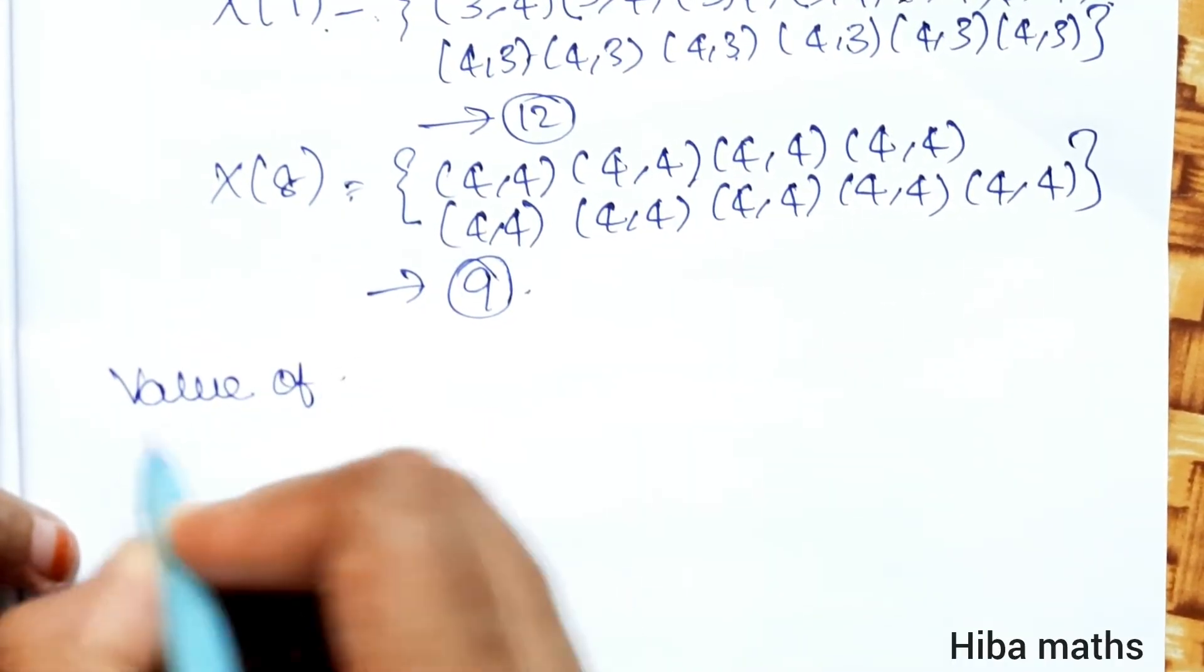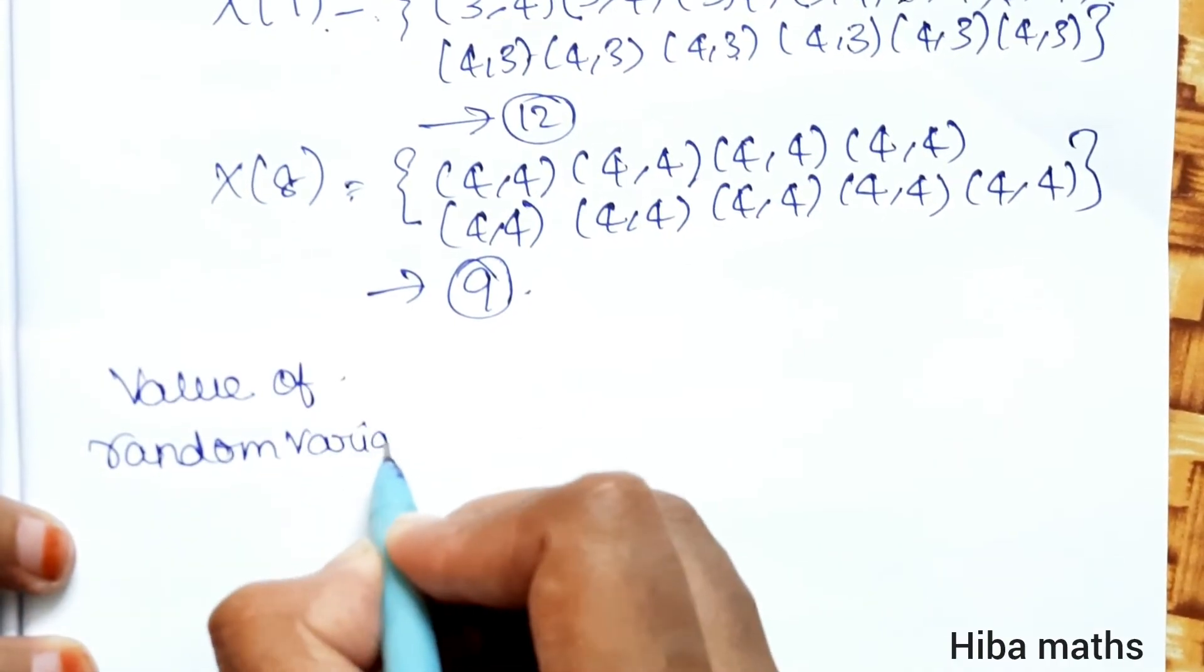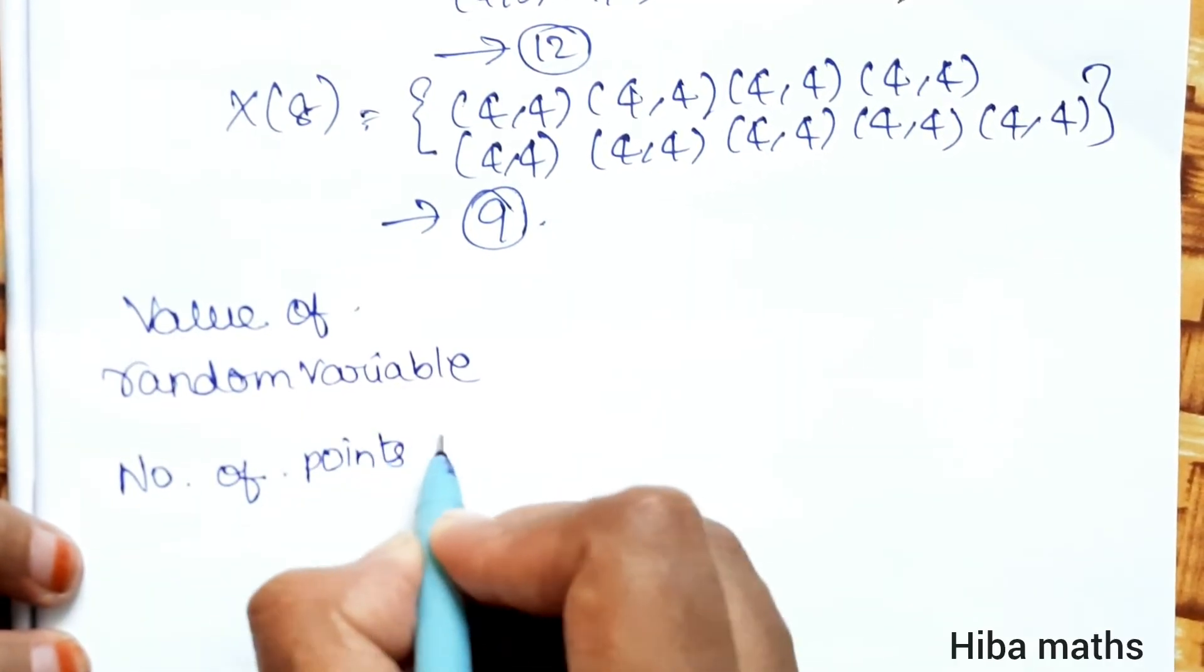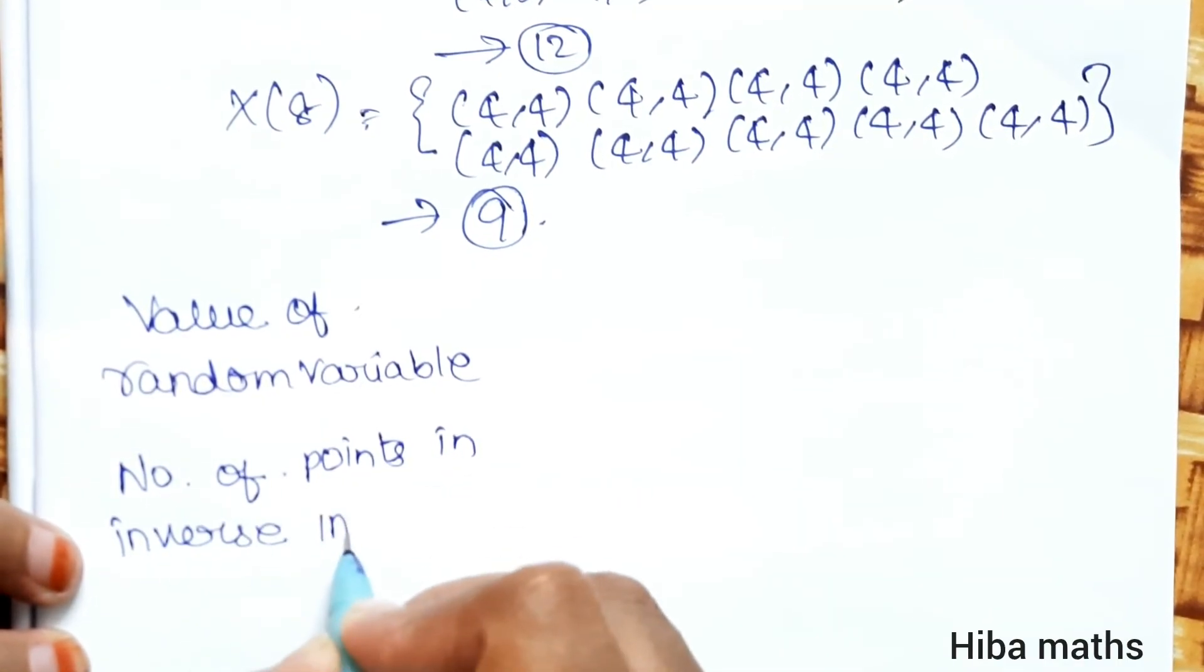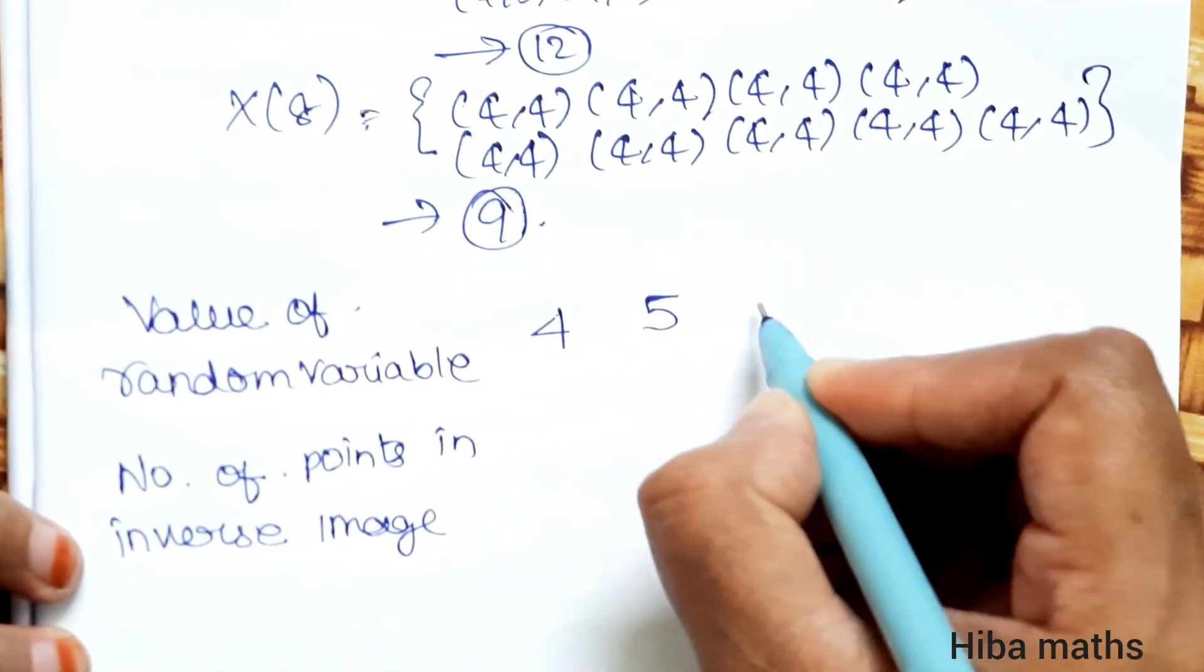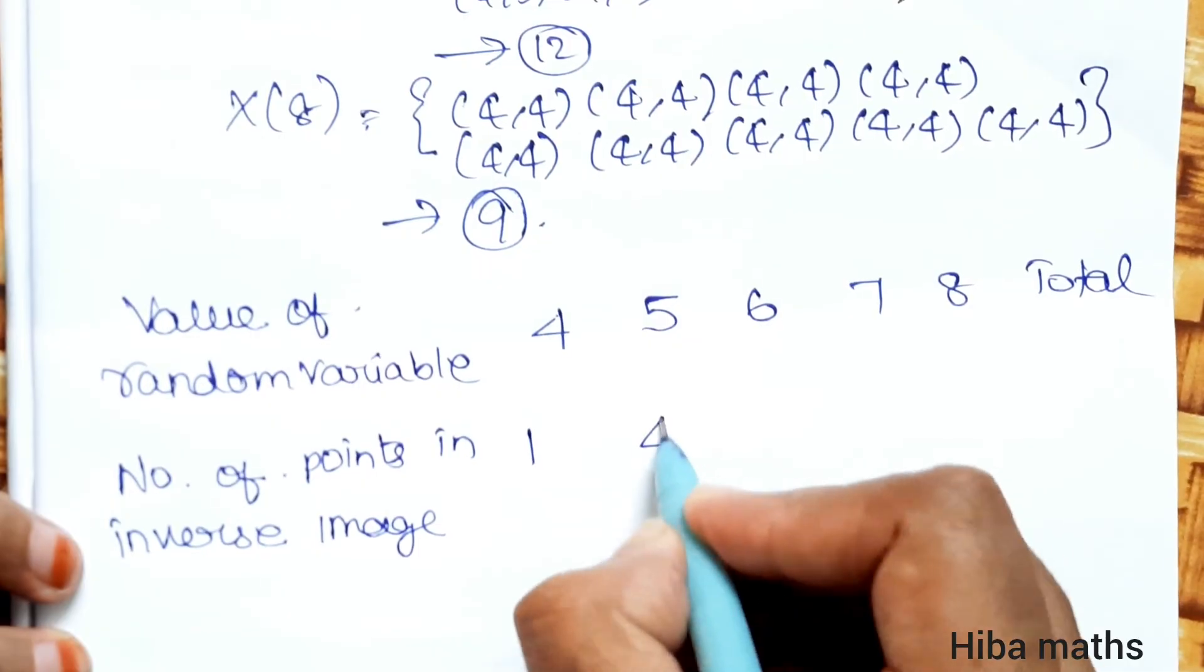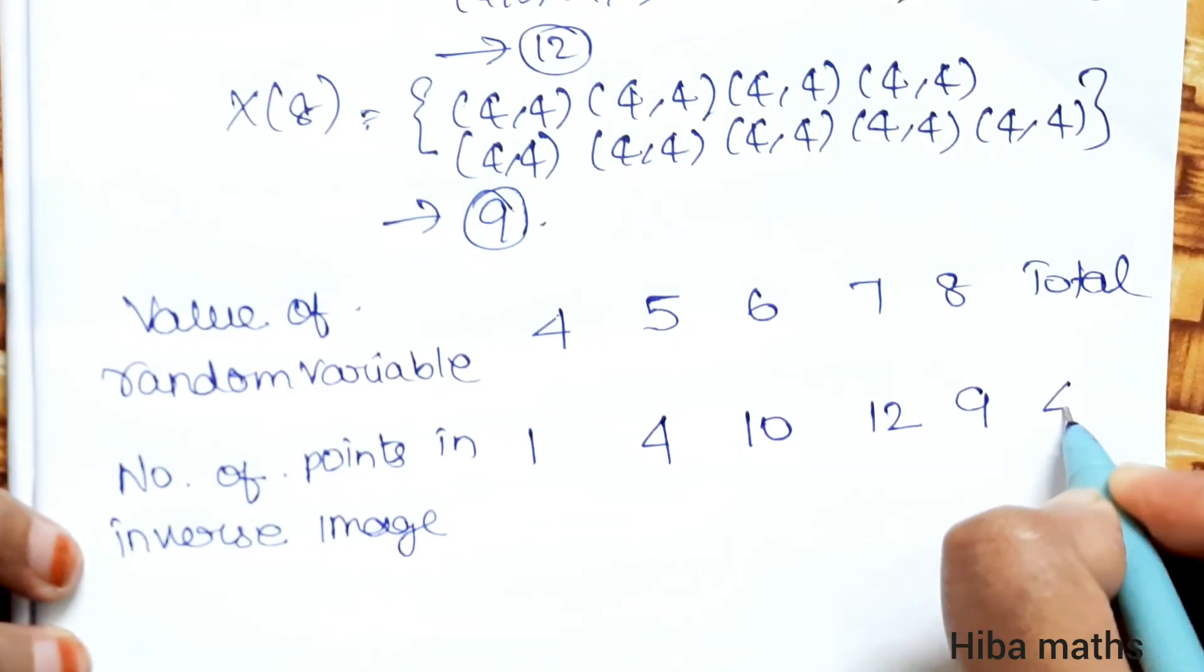Now for the inverse image, value of random variable is 4, 5, 6, 7, 8. Number of points in inverse image: for 4 is 1, for 5 is 2, for 6 is 10, for 7 is 12, and for 8 is 9. Total is 36.